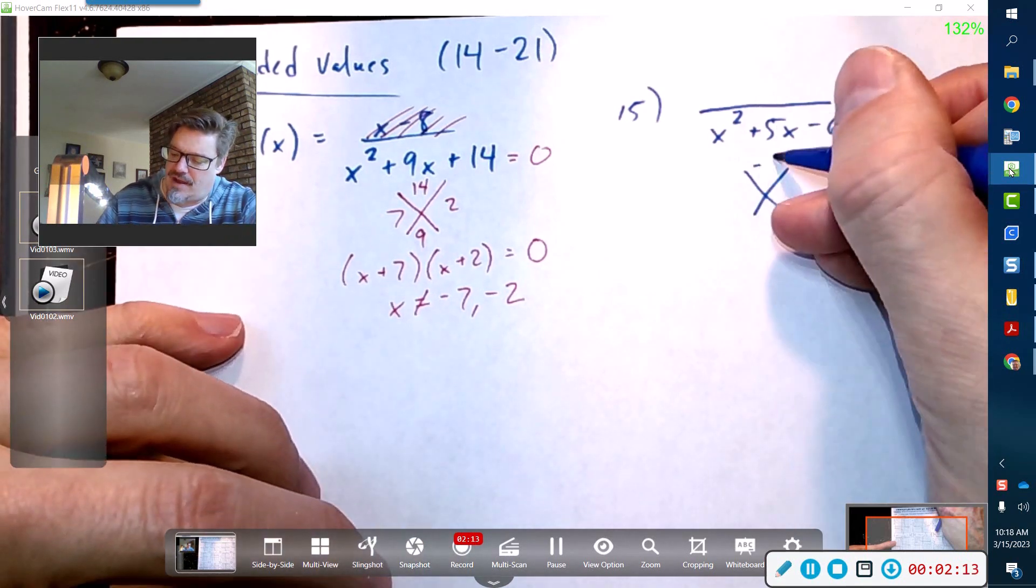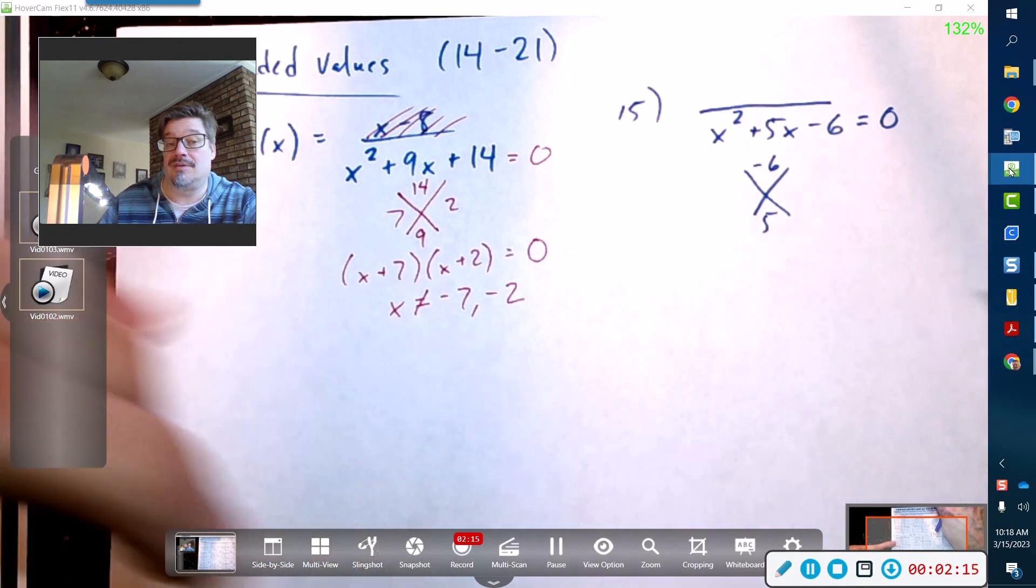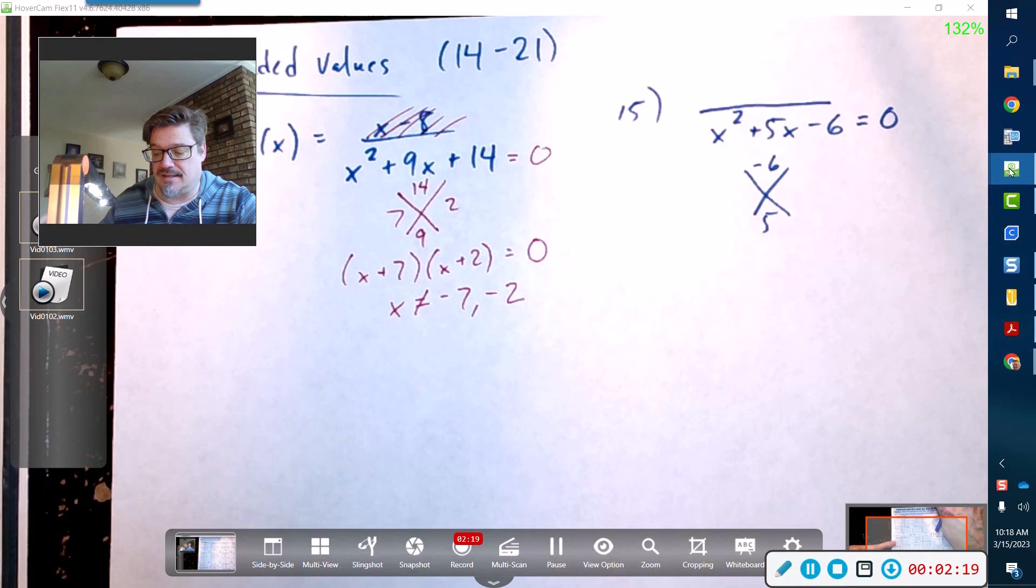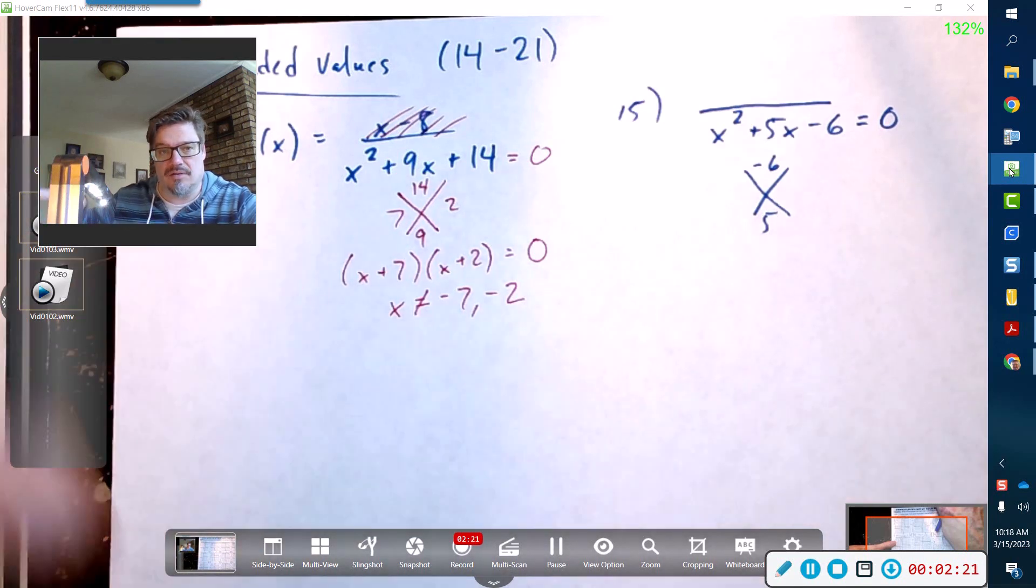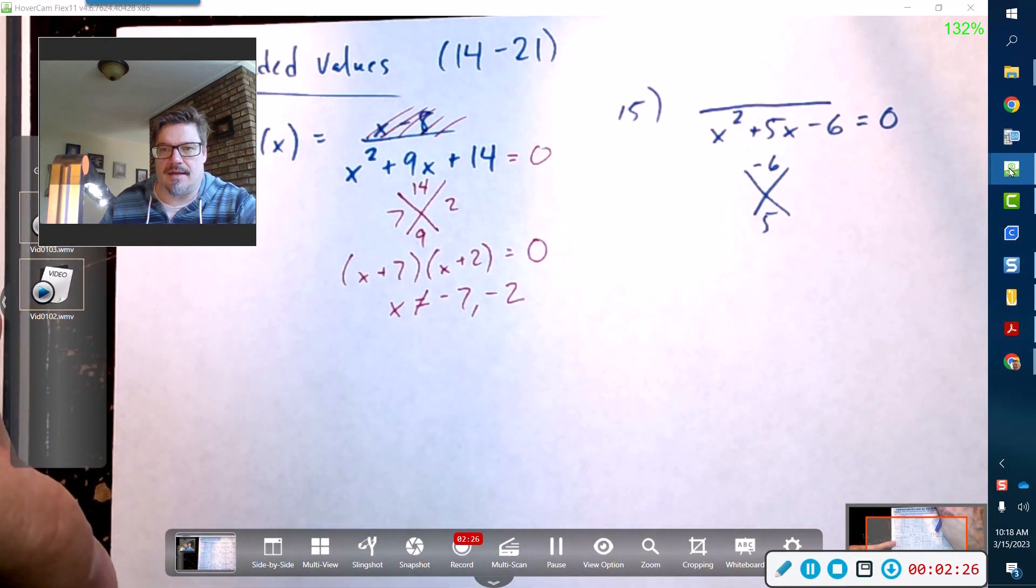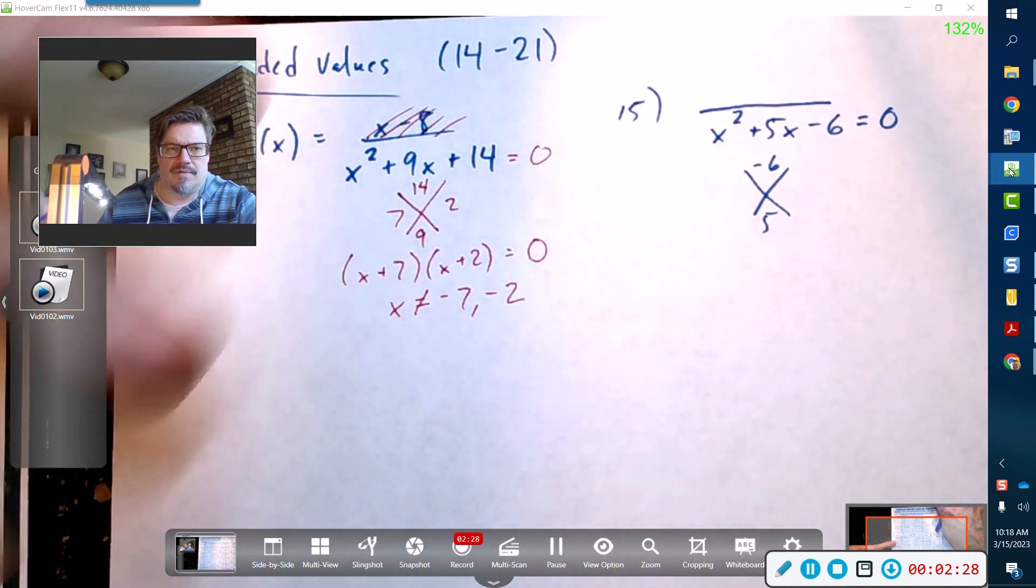I need factors of negative 6 that add up to 5. Now I'm doing this because it's a quadratic—I see x² + 5x - 6, that's a quadratic, so I got to do quadratic solutions. I can't just add 6 to the other side and divide by 5, because you've got two variables with two different exponents.